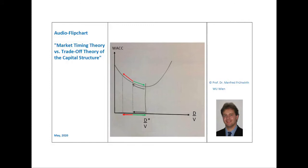What matters in capital structure theory is the capital structure measured at market values and not the one at book values. Therefore, all symbols used in this audio flipchart represent market values. On the flipchart, we use the symbol D for the volume of debt and the symbol V for the total value of the firm, which is the volume of debt and equity together. We see on the horizontal axis the debt ratio, which is the volume of debt divided by the total value of the firm, so D over V.